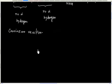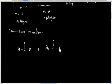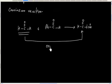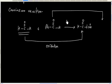In the Cannizzaro reaction, one molecule gets oxidized and one molecule gets reduced. So we will have oxidation and reduction. Generally, in this reaction, formaldehyde gets oxidized, so we will have the salt of formic acid — this is oxidation. And benzaldehyde gets reduced — this is reduction.